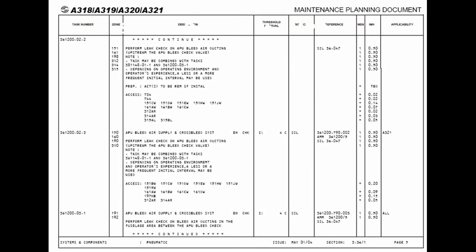Here we show you an example of an MPD in which all details can be found, providing general guidance for operators to develop their individual scheduled maintenance program. Each individual task in the MPD has received an identification number, while all tasks are grouped on the basis of ATA chapters. The description of the task is provided in general terms, while references like the AMM are provided for the accomplishment of the task.